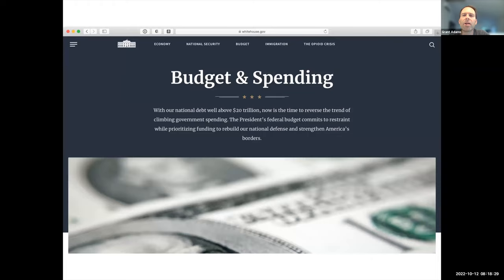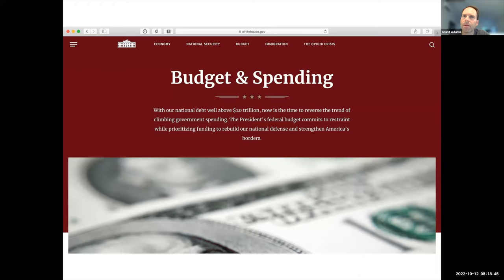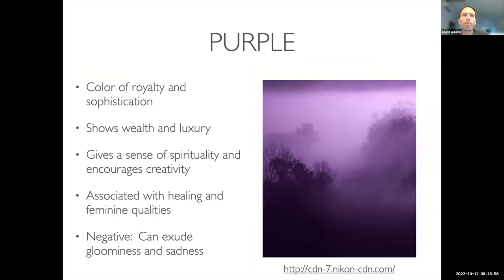Here's a newer version of the White House website — also blue, also flipping to red gives a very different feel. It's your job as a designer to make these conscious decisions about what you want it to look like. Purple is generally the color of royalty and sophistication, showing wealth or luxury. This goes back to when clothes were dyed with natural dyes — purple dye was the most expensive, so only the wealthy could afford it, making it symbolic of royalty and sophistication. Purple can also suggest spirituality, creativity, healing, or feminine qualities, and can be slightly gloomy or sad.